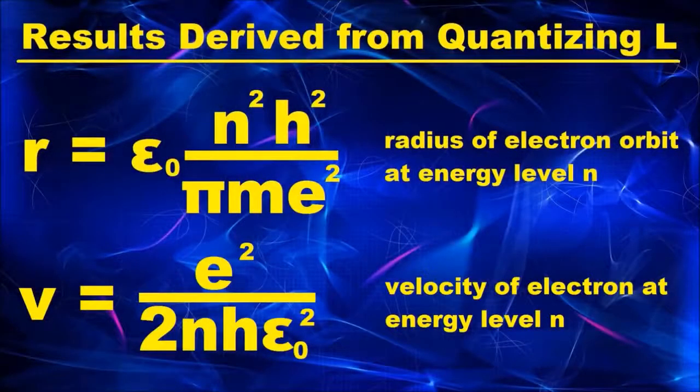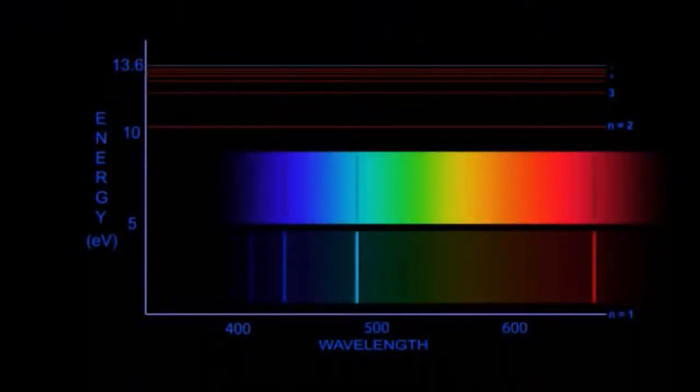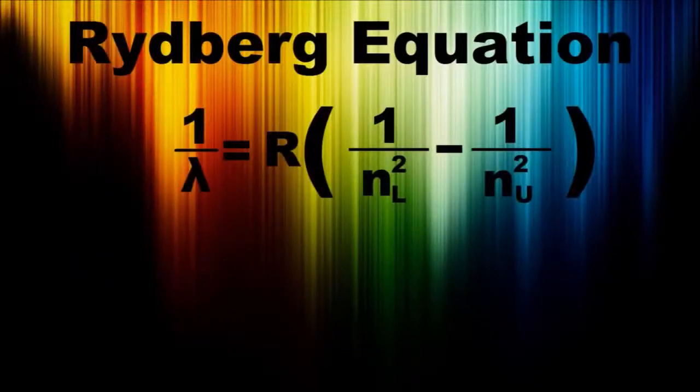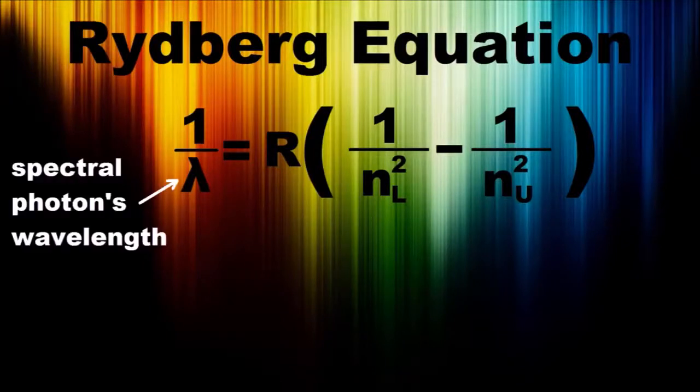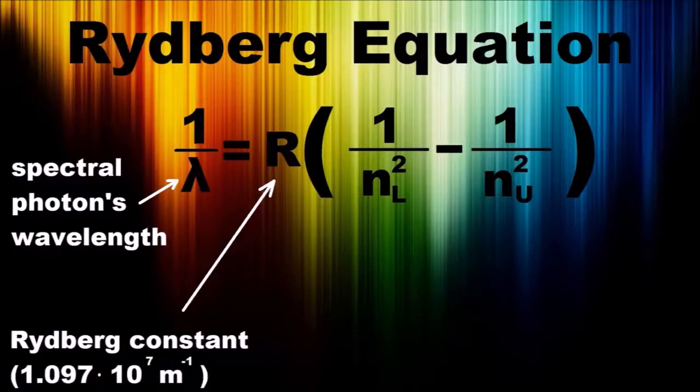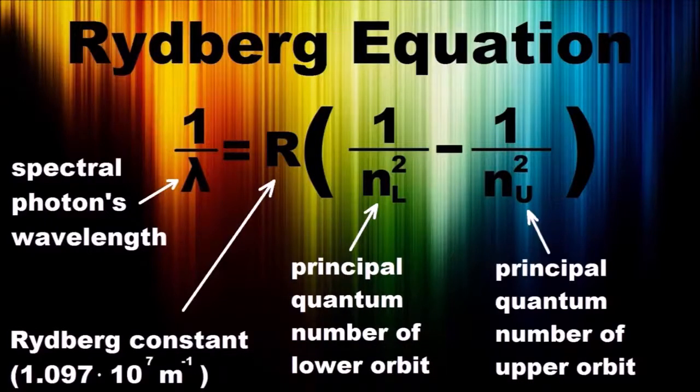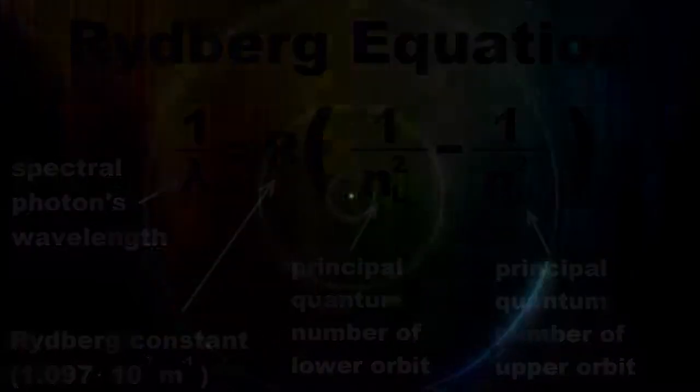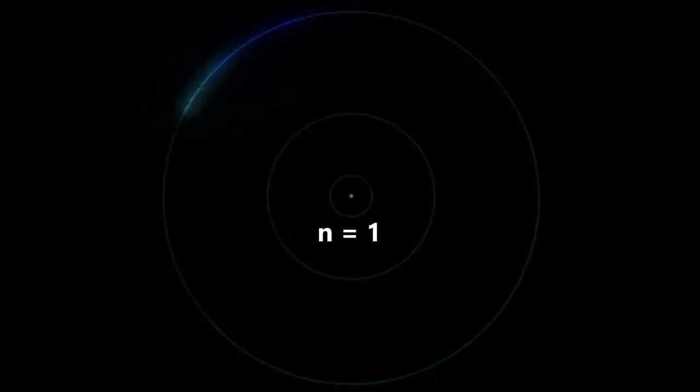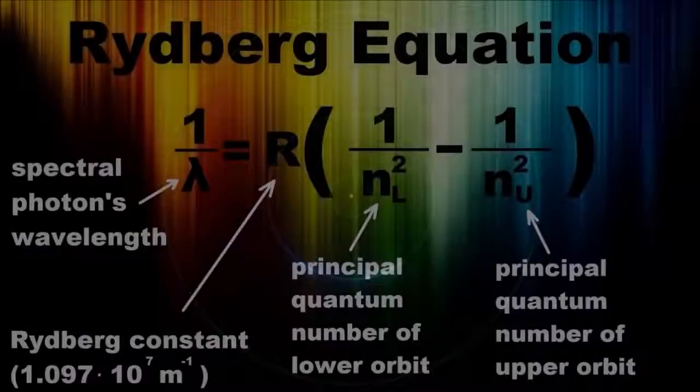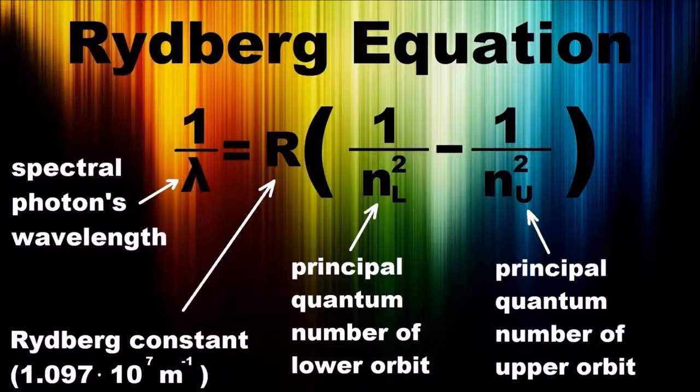Finally, with the orbital radii and velocities available to physicists, it became possible to derive a general equation that predicted the energies of the hydrogen atom's orbits, and by extension, the wavelengths of its emission and absorption lines. The result is this, the Rydberg equation, which was named after the Swedish physicist who did pioneering work on hydrogen spectrum. The inverse of the spectral photon's wavelength is equal to this constant, which is about 11 million inverse meters, times this expression, where Nₗ is the principal quantum number of the lower orbit and Nᵤ is the principal quantum number of the upper orbit. Remember, the principal quantum numbers are just sequential integers. The ground state is 1, the first excited state is 2, and so on.